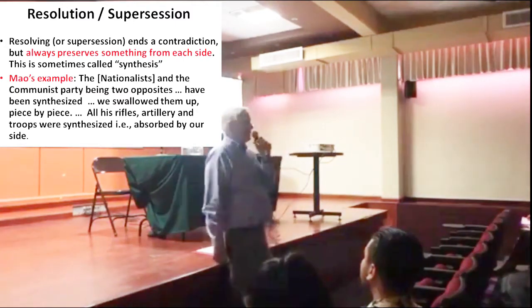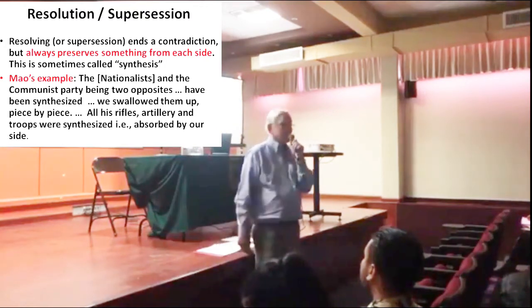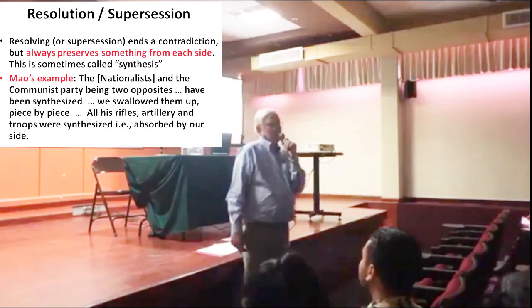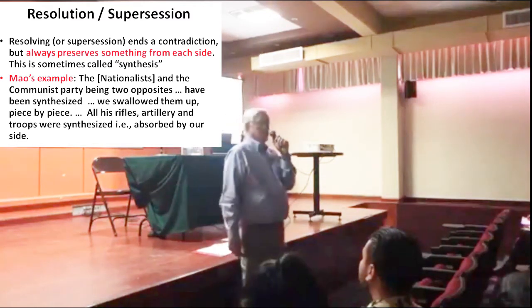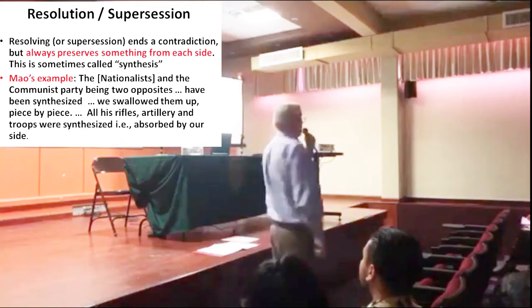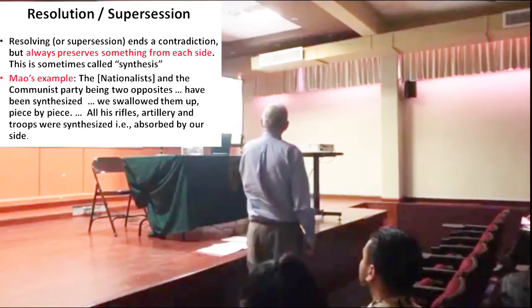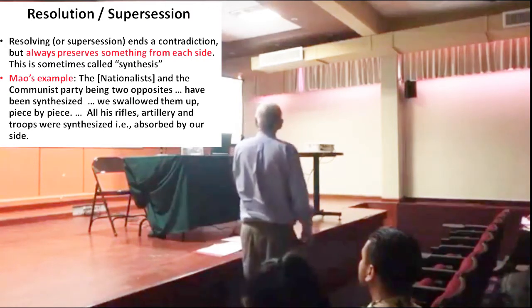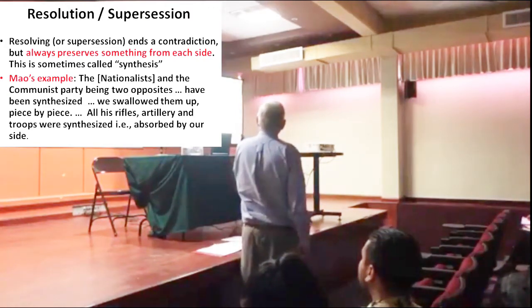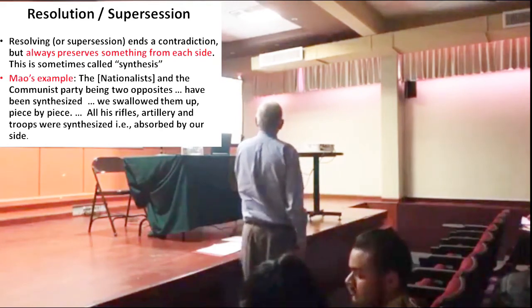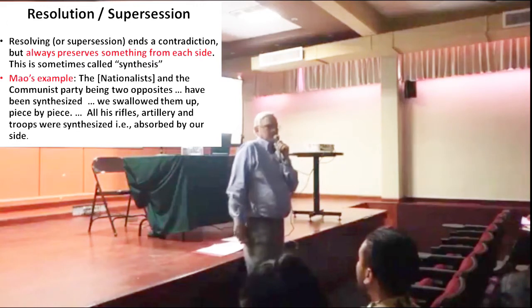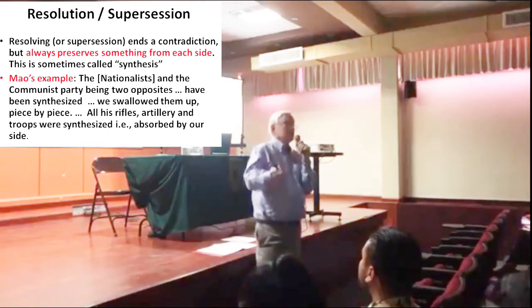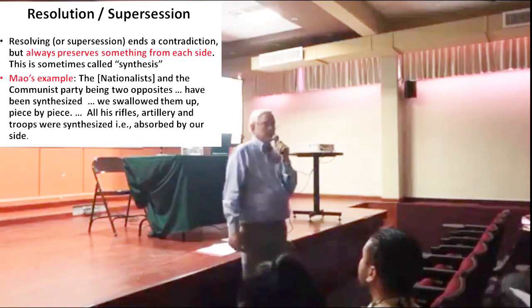Mao Tse-tung gave a vivid account of what synthesis means: one side eats the other up but spits out some of the pieces. His example was the relationship between the communist movement and the Kuomintang nationalists in China after the long civil war. His analysis says the nationalists and the communist party, being two opposites, were synthesized — meaning the communists won. They swallowed them up piece by piece: rifles, artillery, and troops were absorbed into their side. They recruited willing soldiers and let others go home. Something is always preserved in a resolution.